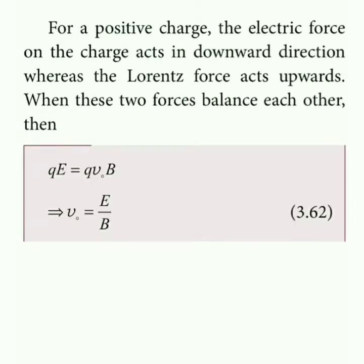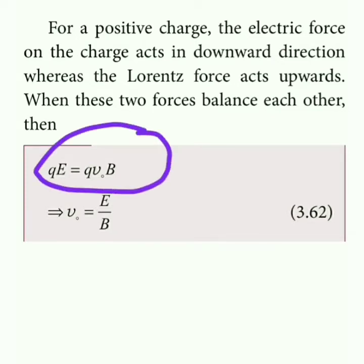For a positive charge, the electric force on the charge acts in the downward direction, while the Lorentz (magnetic) force acts upward. The equation for equilibrium is qE equals qv₀B, where qE is the electric force and qv₀B is the Lorentz force.